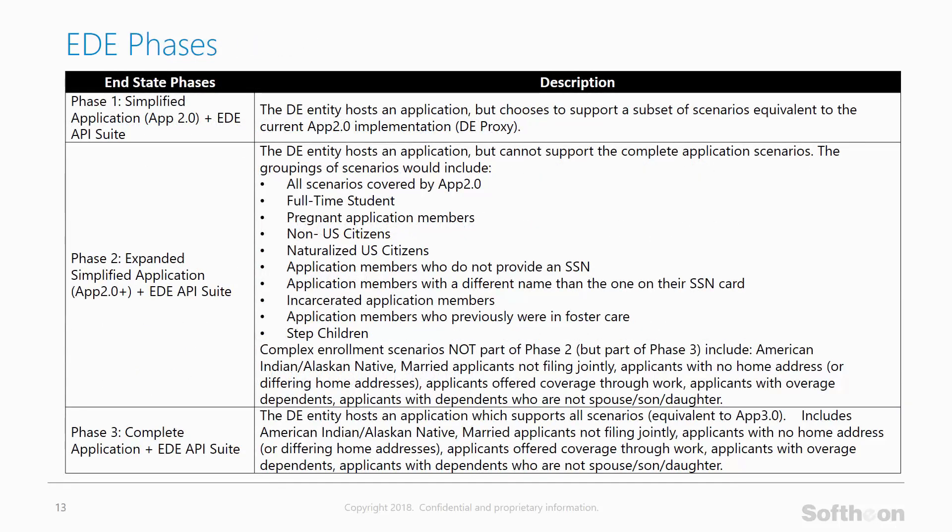So what are those phases? Phase one is really just the app 2.0 implementation — if you were familiar with the classic direct enrollment double redirect process and wanted to continue, you can replace that double redirect with enhanced direct enrollment. Phase two includes more different scenarios that may not have been covered by the double redirect process, and adds components to replace the proxy limitations. Phase three is viewed as proxy-plus: while the proxy is really about initial enrollment, phase three includes post-enrollment activities such as updating addresses or telephone numbers.